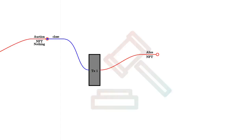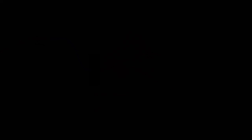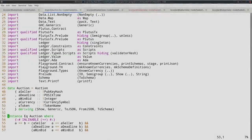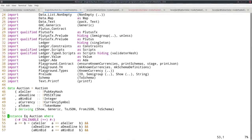The script logic when there is no highest bidder is slightly different for the close redeemer — it must check that the NFT goes back to Alice. Actually, since this will be triggered by Alice, she could send the NFT wherever she wants. So let's have a brief look at the code, but don't worry — I don't expect you to understand it at this point.